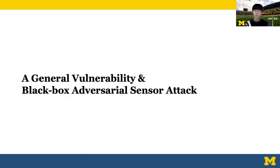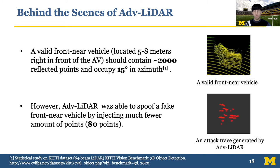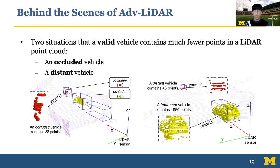Let's get into vulnerability identification and the black-box attack. Since our goal is to spoof a fake vehicle right in front of the victim AV, it is worthwhile to first investigate what a valid vehicle looks like in a LiDAR point cloud at a front-near location. A valid front-near vehicle located 5 to 8 meters in front of the AV should contain around 2,000 reflected points and occupy 15 degrees in azimuth in a 64-beam LiDAR's point cloud. However, ADV-LiDAR was able to spoof a fake front-near vehicle by injecting much fewer points, suggesting certain LiDAR-related physical features are not correctly learned in the model, and this vulnerability may generalize to other 3D object detection models.